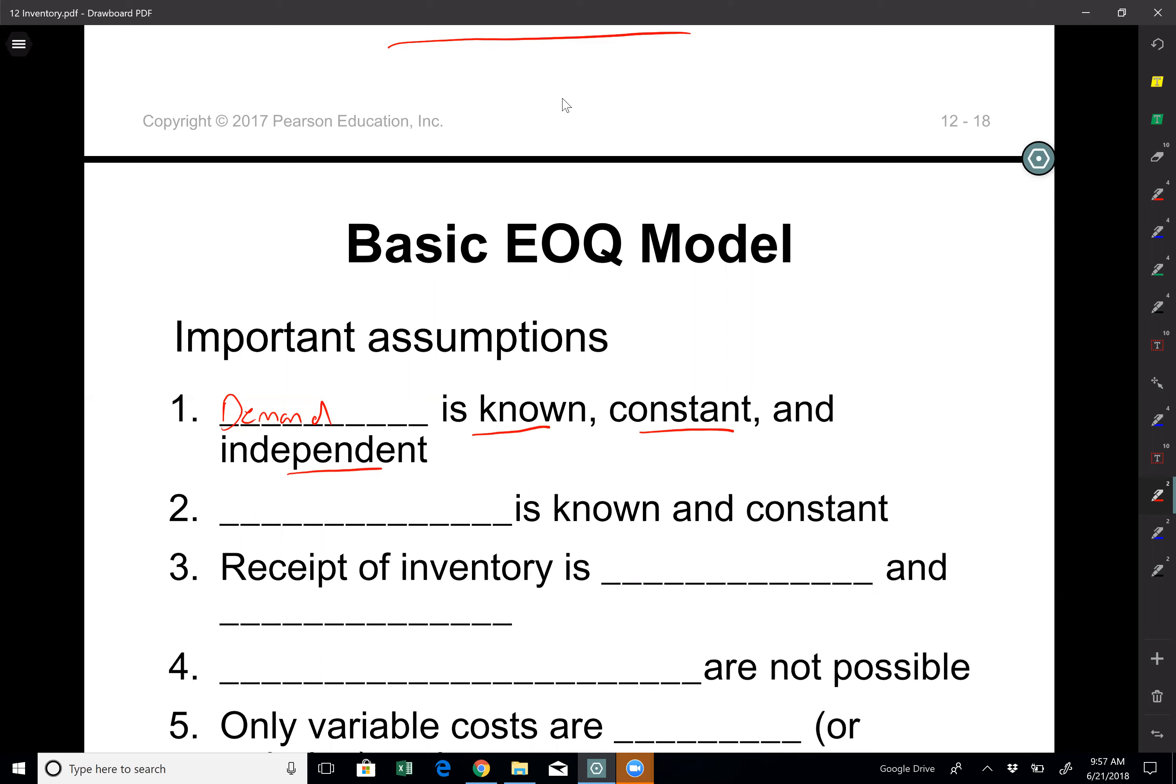Otherwise it's really hard to know the future demand and as we know the demand constantly fluctuates and it's not independent either. It depends on the previous performance and type of product and things like that. So this is one of the big assumptions here in EOQ economic order quantity models.